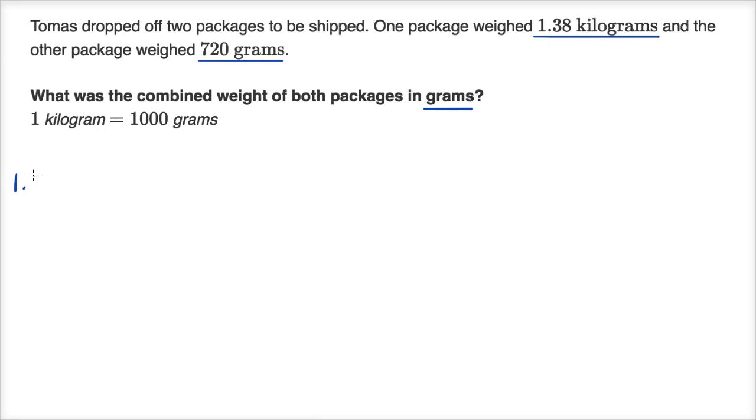1.38, I could write kilograms like that. If one kilogram is 1,000 grams, and that's what the prefix kilo means, it means 1,000. To go from one to 1.38, I'm multiplying by 1.38. So if I wanted in terms of grams, I would take 1,000 grams and multiply by 1.38. So this is going to be 1,000 times 1.38 is 1,380 grams, which I could have just denoted with a G.